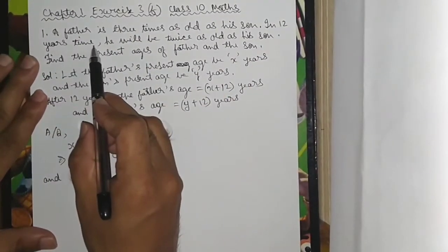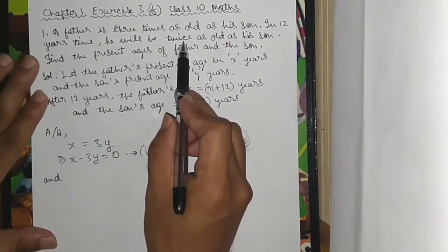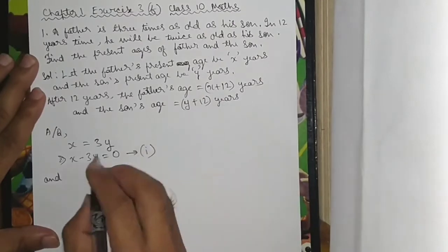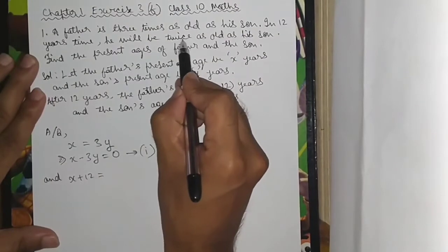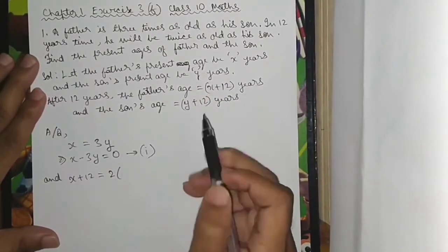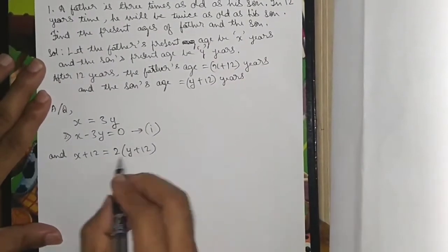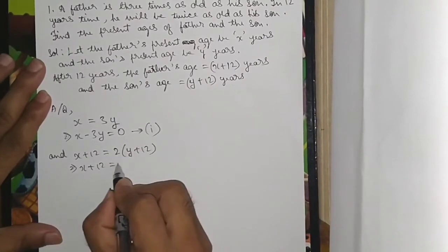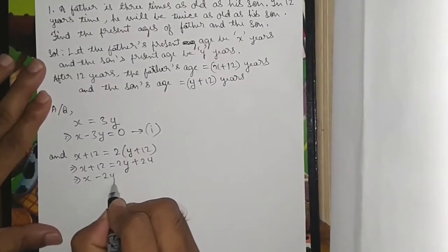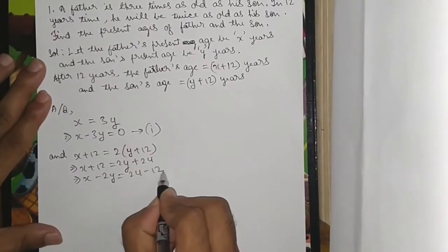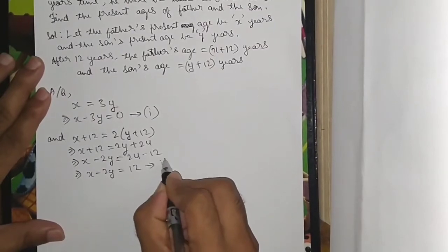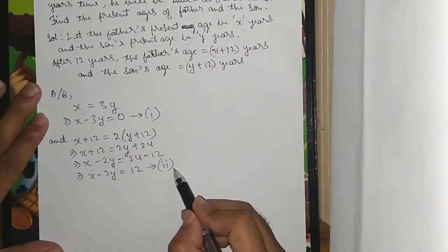In 12 years, he will be twice as old as the son. So x plus 12 equals 2 times y plus 12, which is 2y plus 24. This implies x minus 2y equals 24 minus 12, which is 12. This is equation 2.